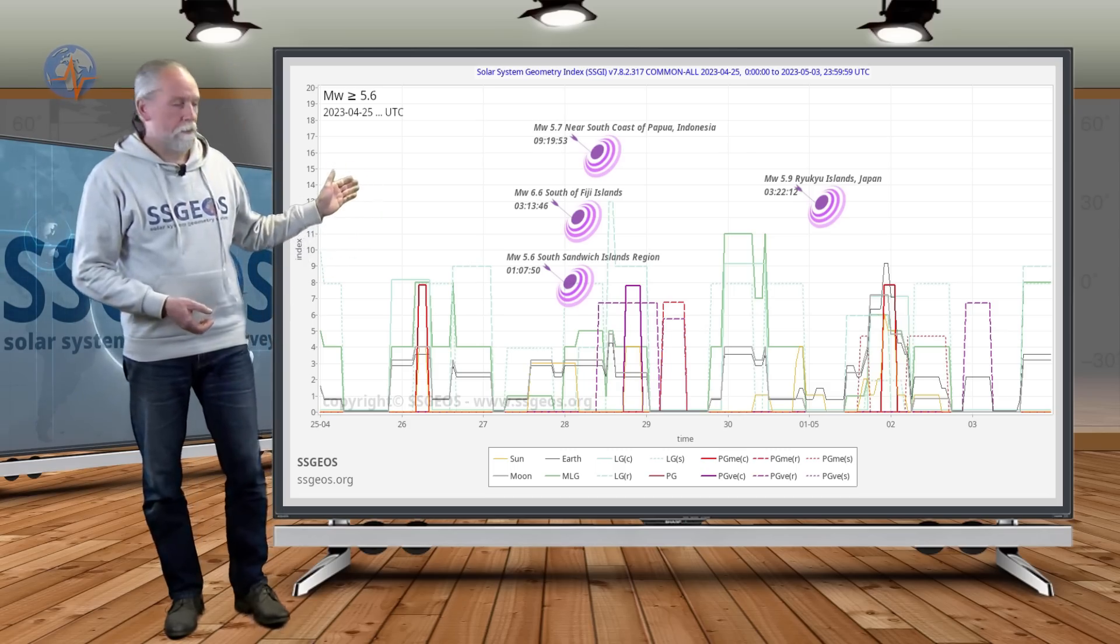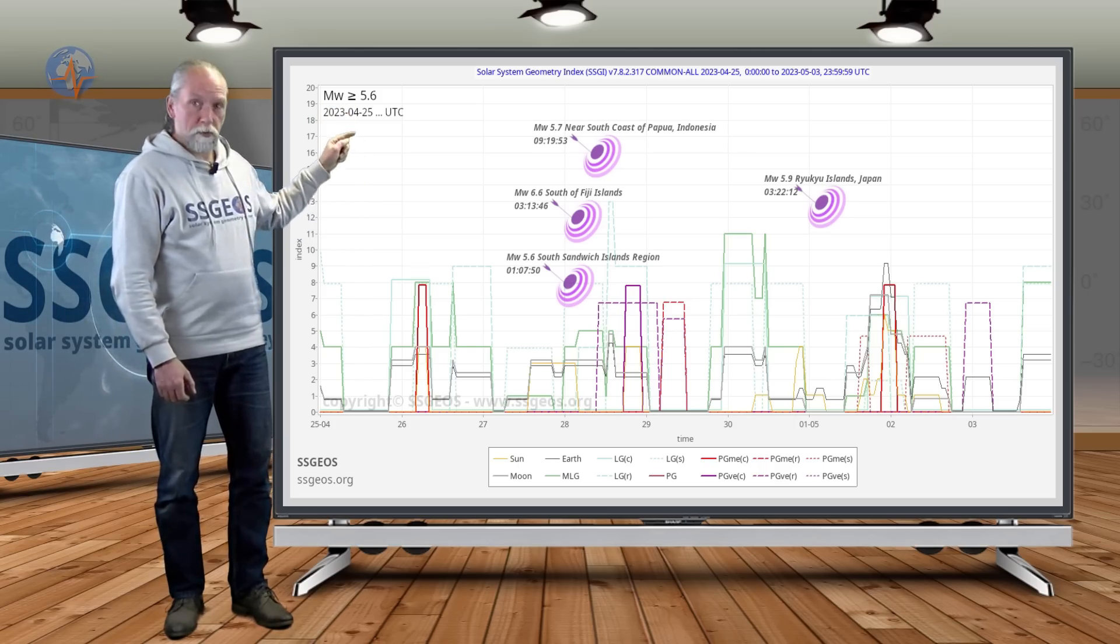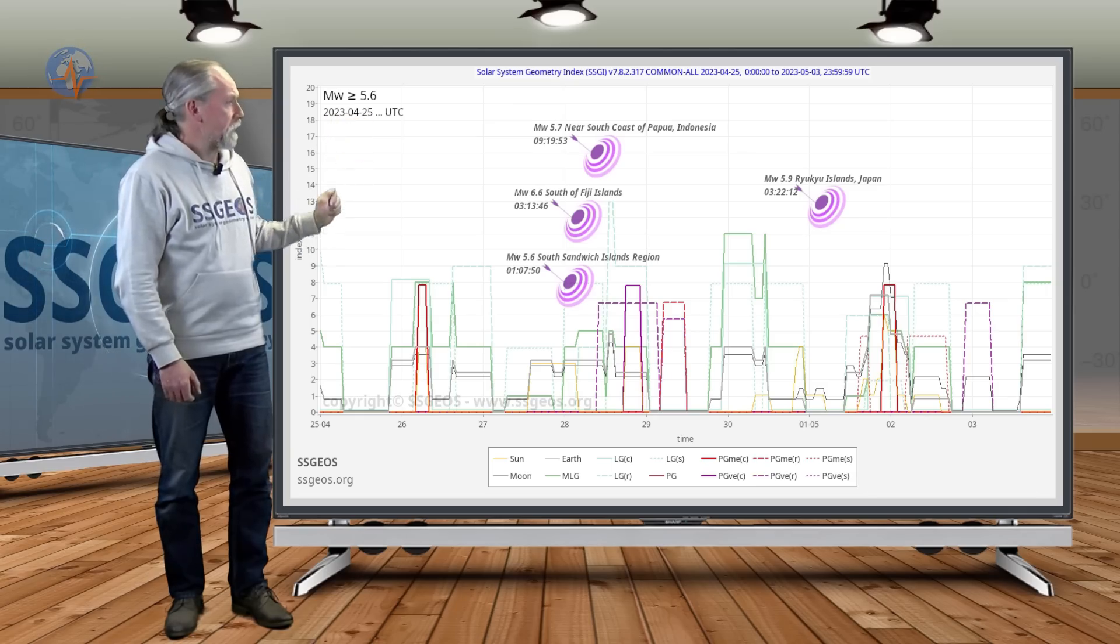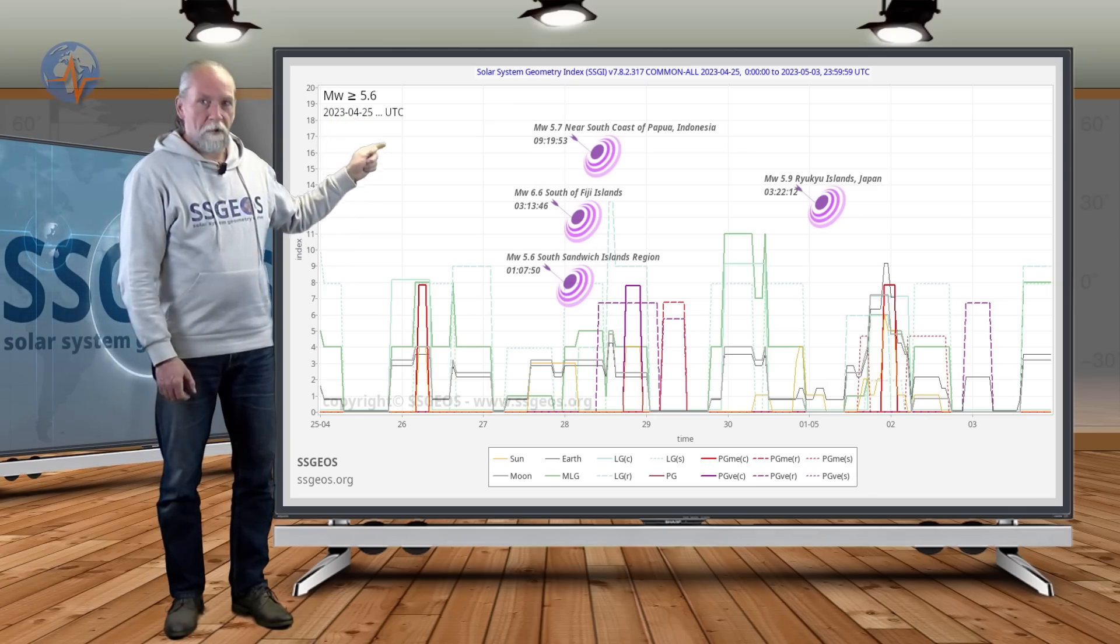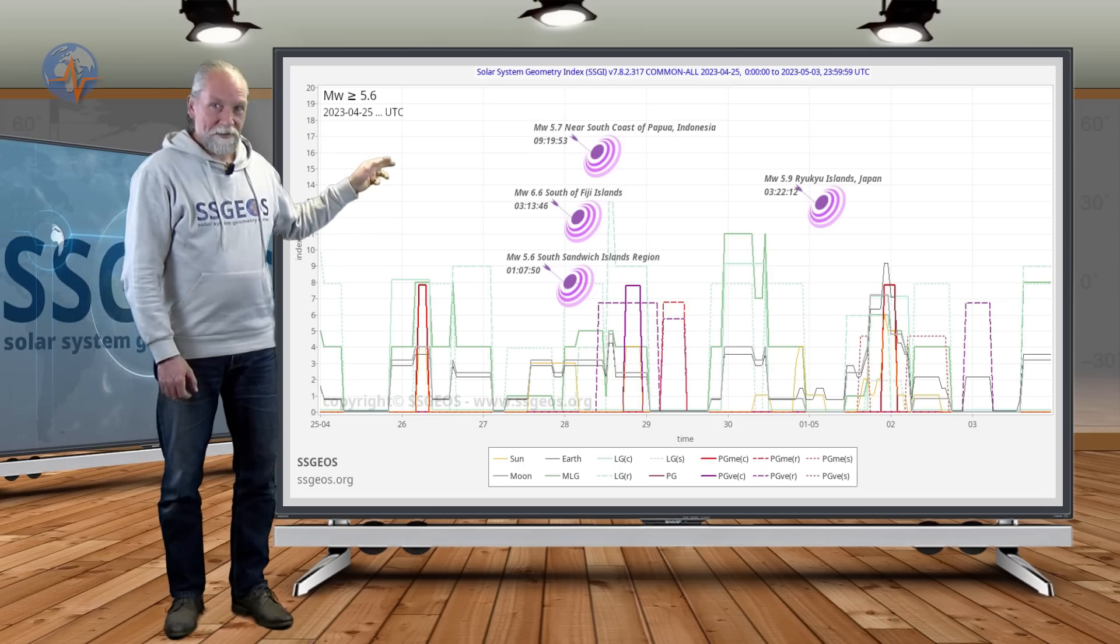If you look at the SGI graph, as I mentioned in the previous update, we had stronger seismic activity on the 28th, the typical clustering of stronger seismic activity, and we had a magnitude 5.9 borderline 6 at the Ryukyu Islands yesterday.